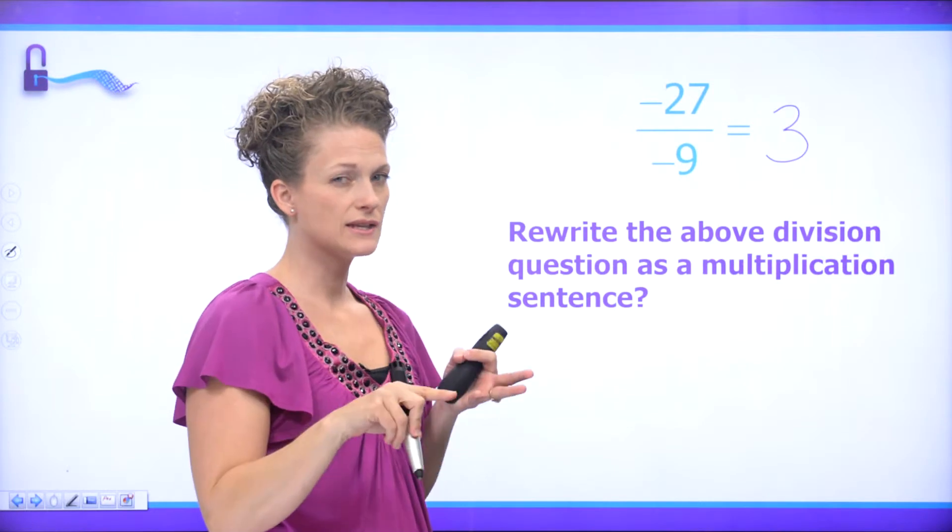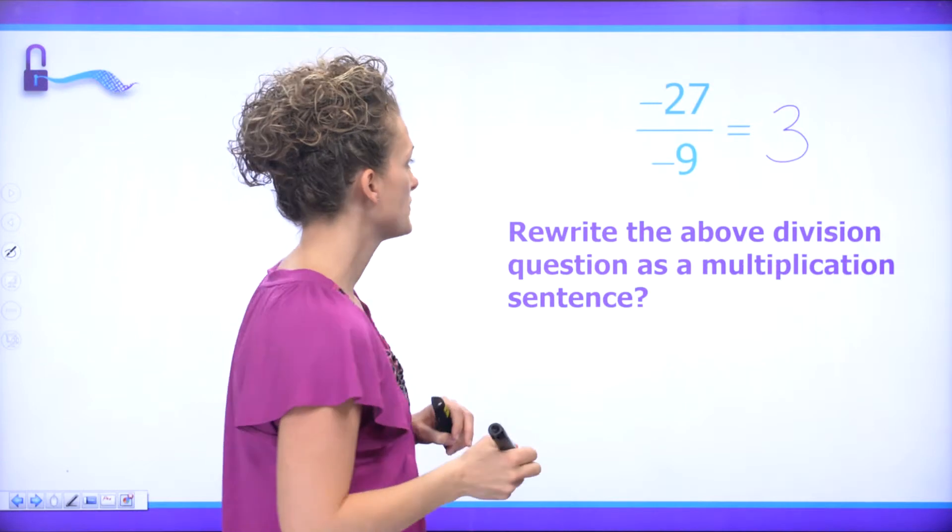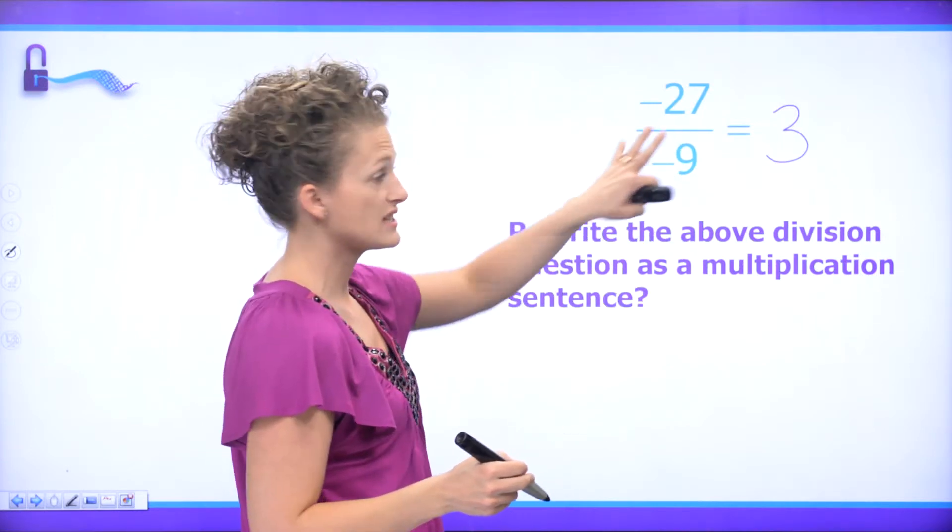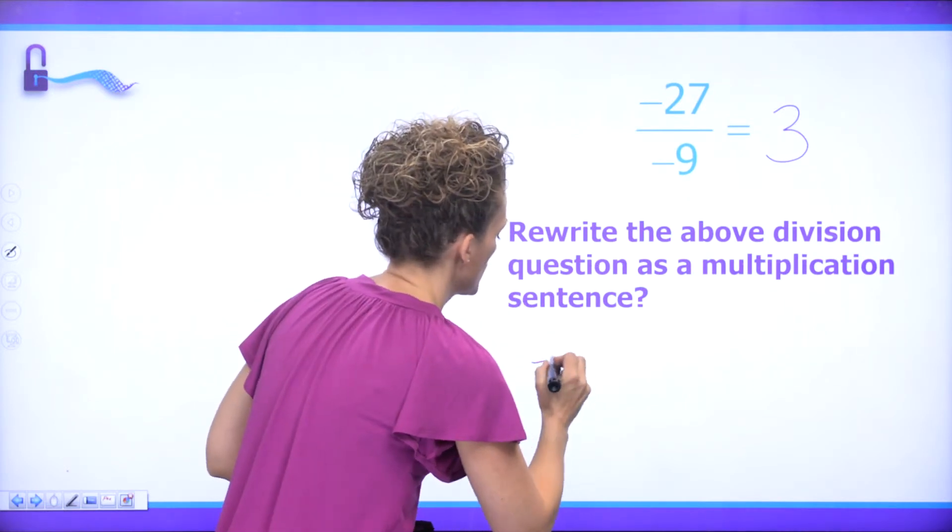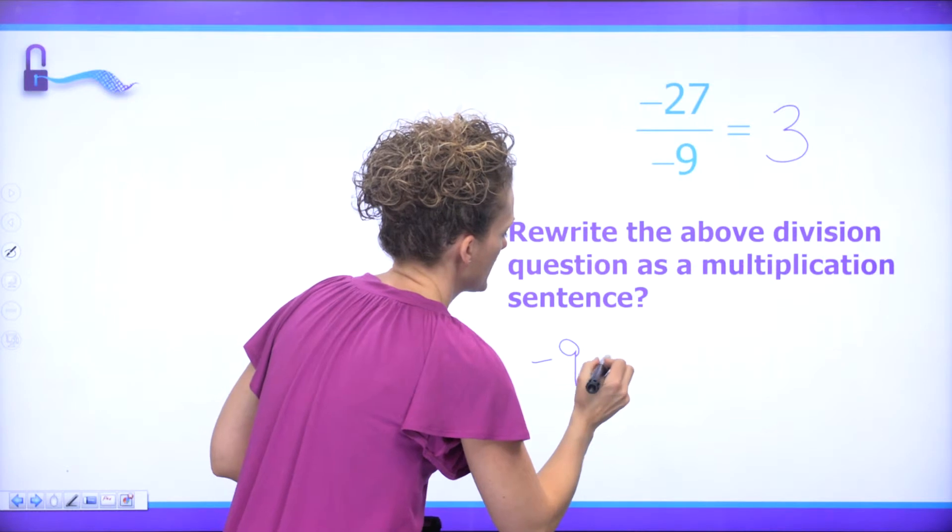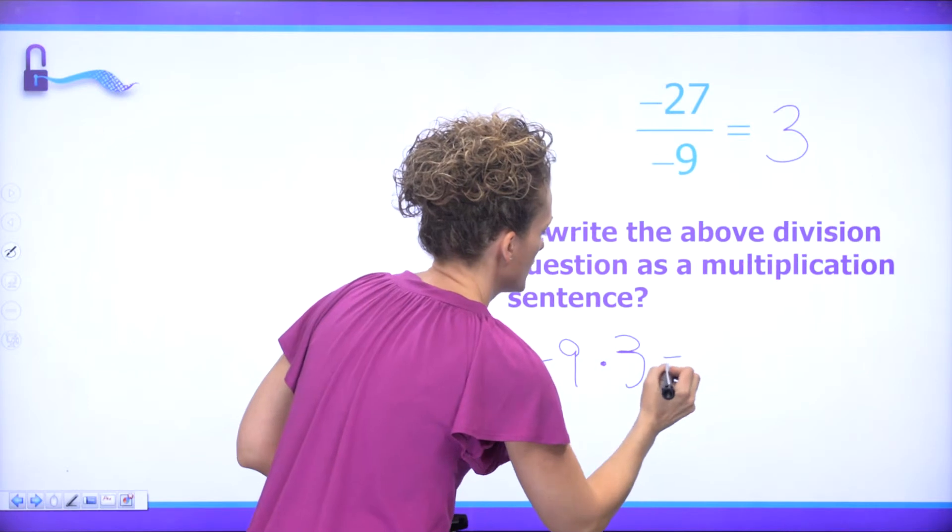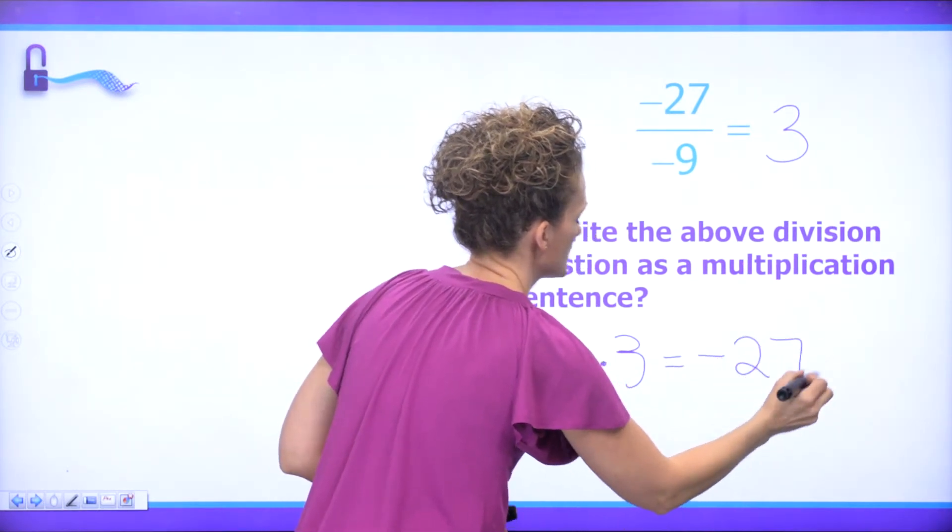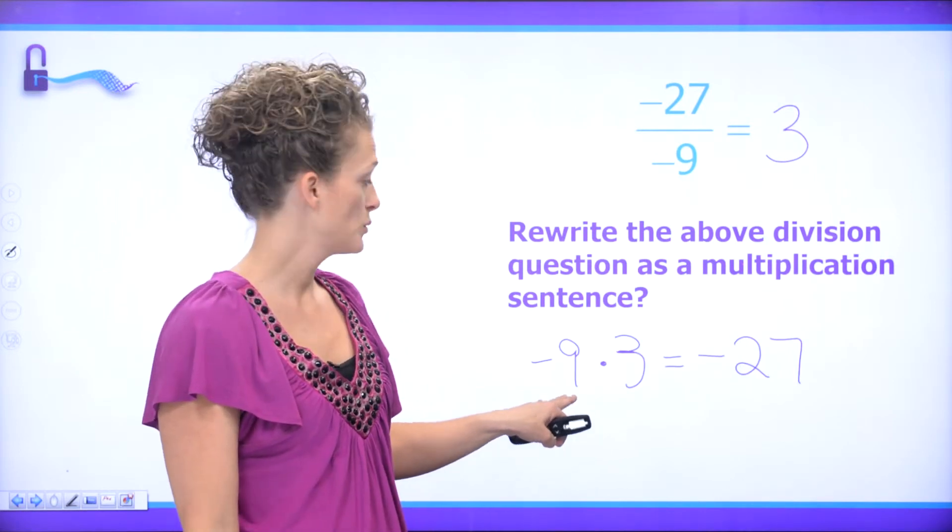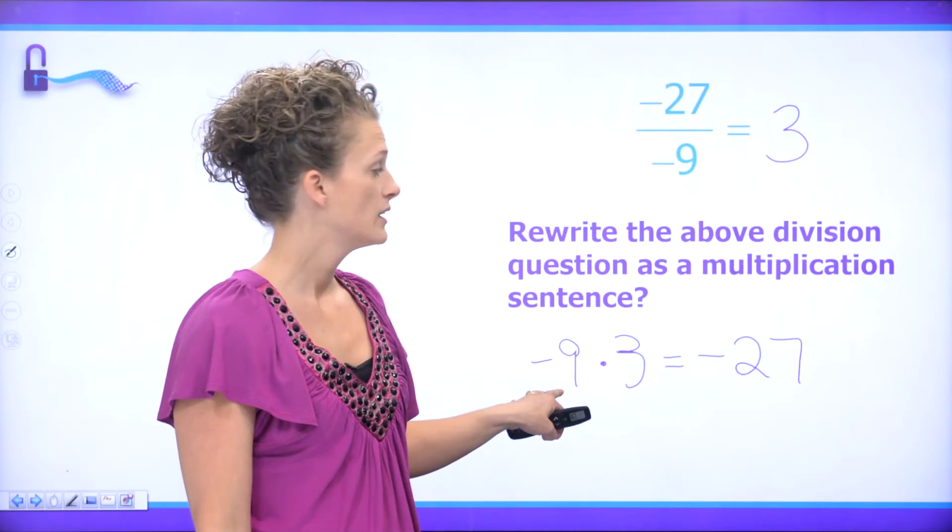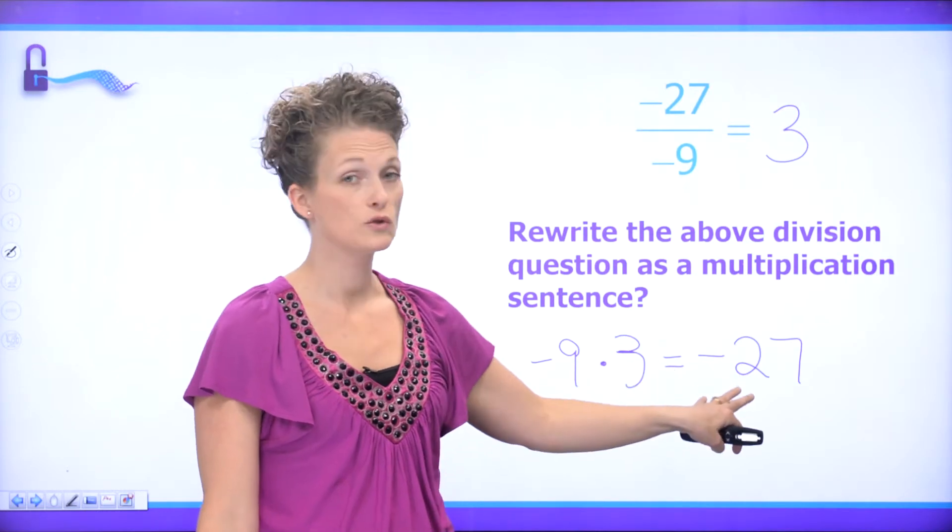All right, so we want to use the same numbers that we've got here, rewrite it as a multiplication sentence like we did before. So I'm going to start with the negative 9 and I'm going to multiply it by a positive 3. That's the 3, and we get negative 27. And if we remember from our multiplication, when one of our integers was negative, we do indeed get negative 27. Negative 9 times 3 is negative 27.